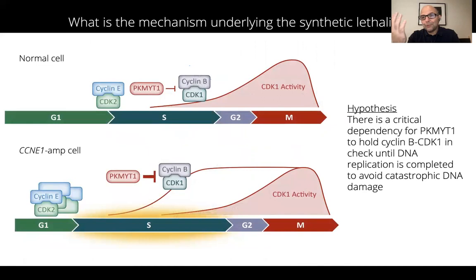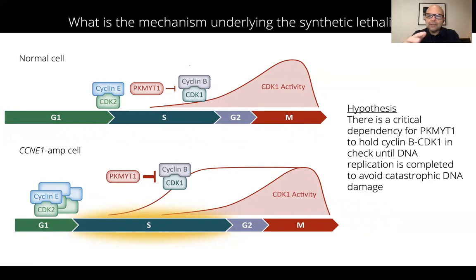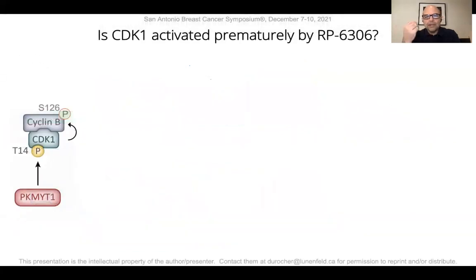Our task was to understand the mechanism underlying the synthetic lethality between PKMYT1 and cyclin E1 gene amplification. Our hypothesis was that there was a critical dependency on PKMYT1 to restrict CDK1-cyclin B activity to avoid catastrophic DNA damage due to unscheduled entry into mitosis. We tested this using a number of assays. First, we asked whether CDK1 is activated by RP-6306, using immunofluorescence to monitor phosphorylation of serine-126 on cyclin B — an autophosphorylation site of the CDK1-cyclin B complex.